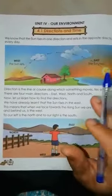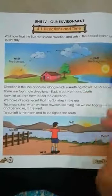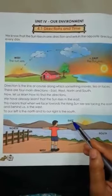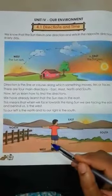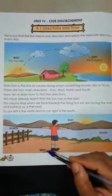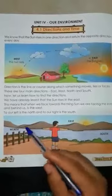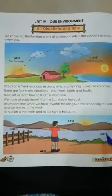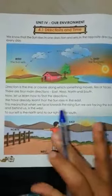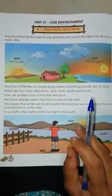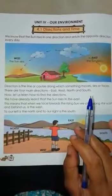There are total four main directions. Which are they? East, opposite is west, north, and then south. These are the four main directions.